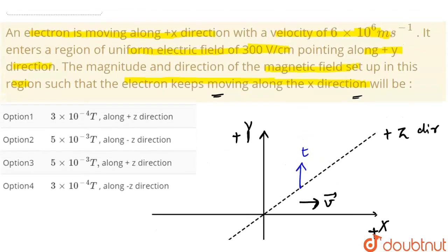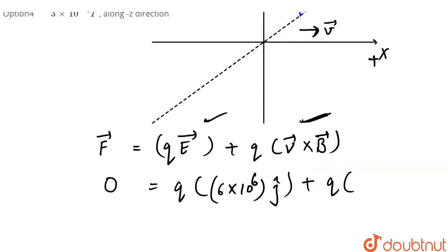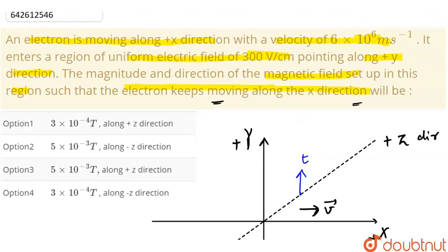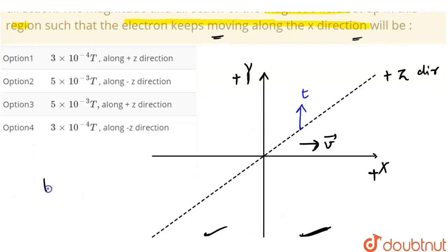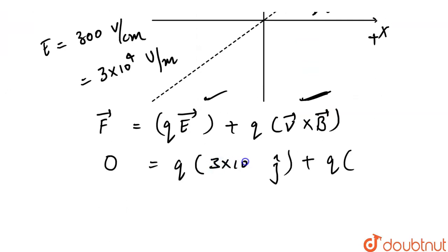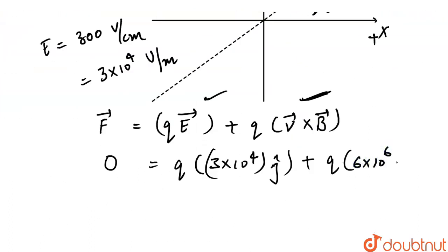The electric field is 300 volt per centimeter, which we can write as 3 into 10 to the power 4 volt per meter. So we write this as 3 into 10 to the power 4 j cap. The velocity is 6 into 10 to the power 6 in the x direction, so it is i cap. The charge is minus e.